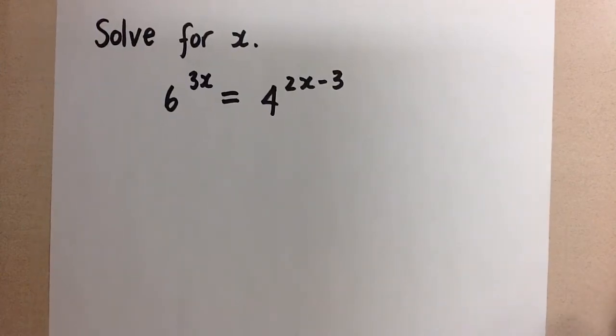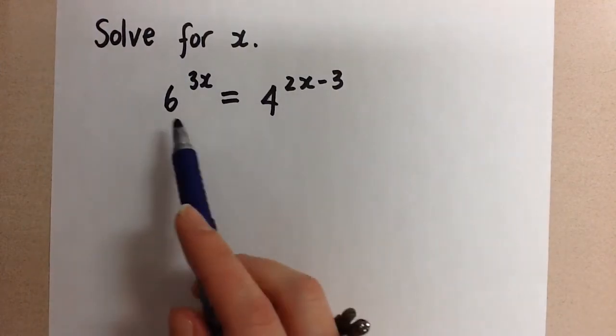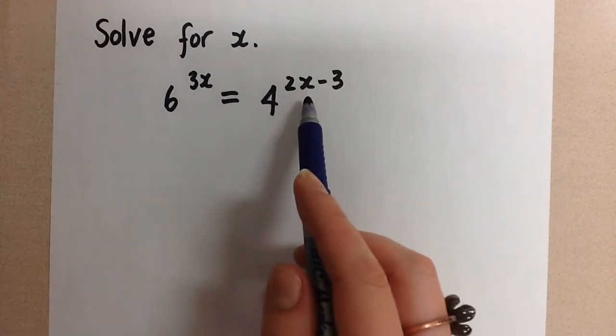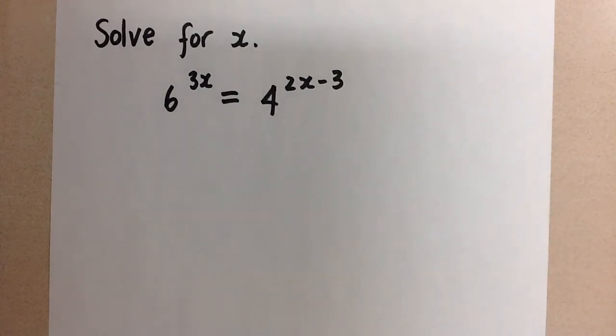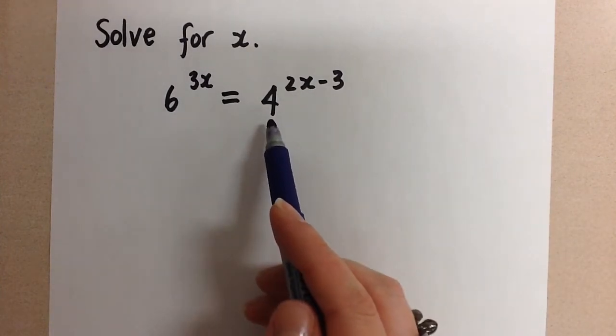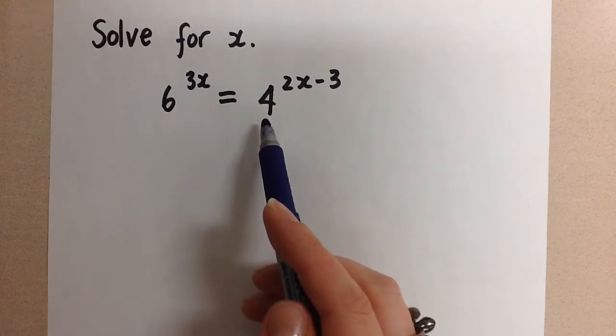Typically, when we are solving exponential equations, we want to work to get the base to be the same, and then we can just equate the two exponents. But in this case, we can't get 6 and 4 to have the same base. So we have to go with a different strategy now.